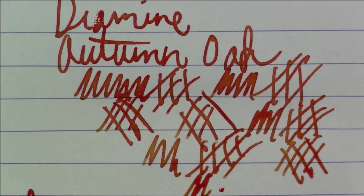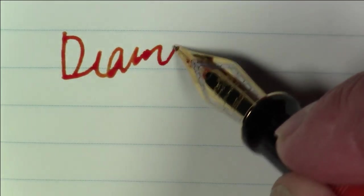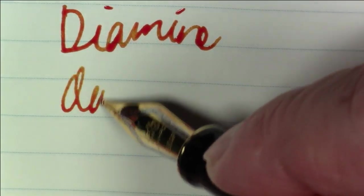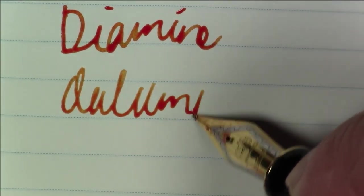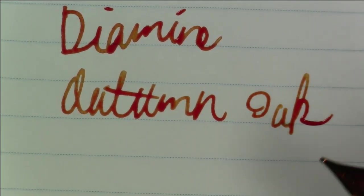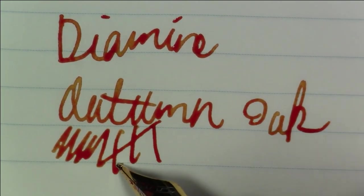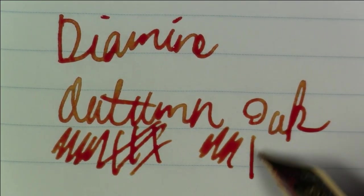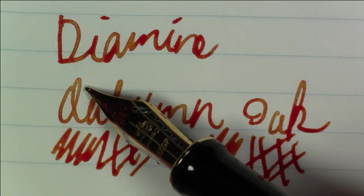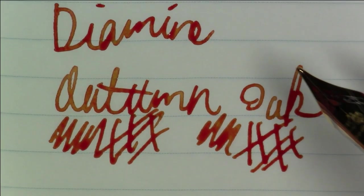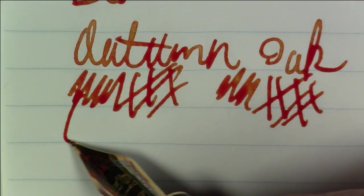That's what it looks like on this Rhodia paper. Let's take a quick look at what this ink looks like on Tomoe River paper. Okay, as we said, this ink is Diamine autumn oak. And you can definitely pick up some shading on this Tomoe River paper. Even on the Rhodia paper, you get a bit of shading. So it goes from sort of like a pale orange to a darkish orange into like a reddish brown color. So it's definitely a nice looking ink.